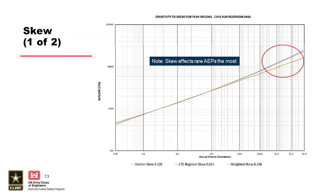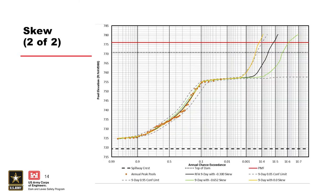Looking at skew as an example: skew often has a large impact on the volume frequency curves and thus on the stage frequency curves, affecting the tail of the distribution at rare AEPs. In this sensitivity analysis example, the range of skew values possible at the project produced results with more than an order of magnitude of difference. The differences in skew were due to varying the inclusion of inflow data and regional skew data in the flow frequency analysis, and since there is greater than an order of magnitude difference at the top of dam, we classify this as having primary risk effects.